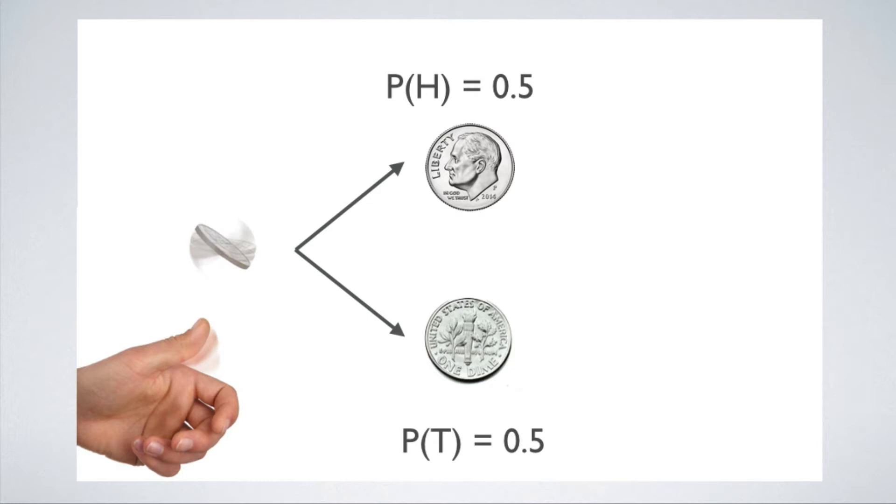First of all, let's calculate the probability of an arbitrary sequence of 10 coin tosses. The chance of a coin landing heads or tails is one half, right? Now, one of the rules we learned in the tutorial on reasoning with probabilities is how to calculate the probability of a conjunction of independent events.